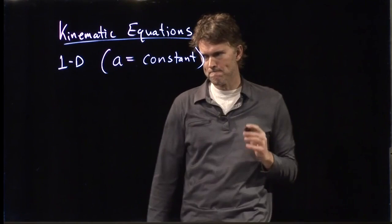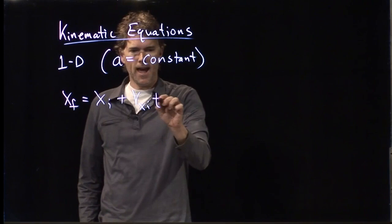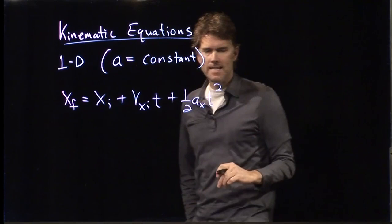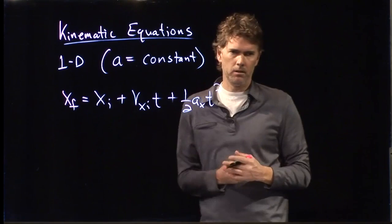So what do those kinematic equations look like? One of them looks like this: x_final equals x_initial plus v_x_initial times t plus one-half a_x t squared. How did we get that? We started with a as a constant, integrated to get velocity, then integrated again to get position.